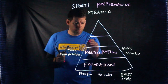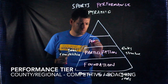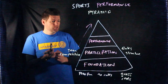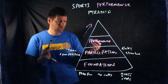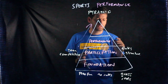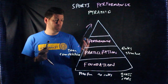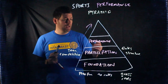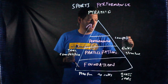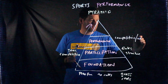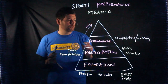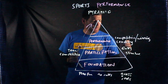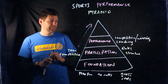Then we move on to the performance tier. You'll notice the pyramid is narrowing as we go up, and there's a reason for that we'll come back to. At the performance level, we're starting to join a team outside of school — this might be somewhere like Shaftesbury Rockies Football Club, playing for Dorset County, or performing gymnastics at a high level at a club. The emphasis is now on winning, and there tends to be specialist coaching at this level, with parents driving long distances to get to competitions.